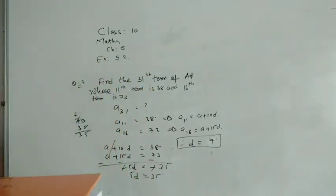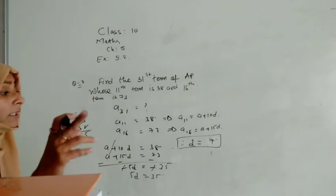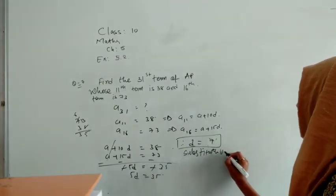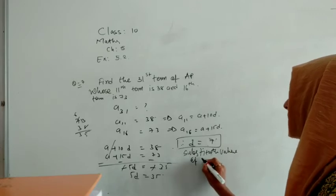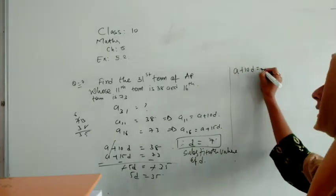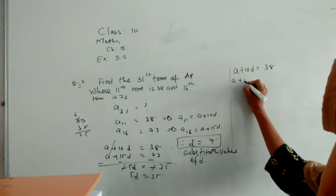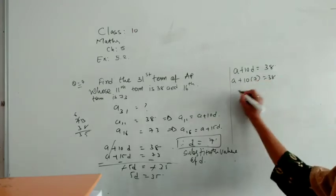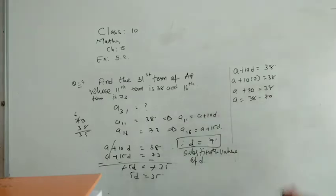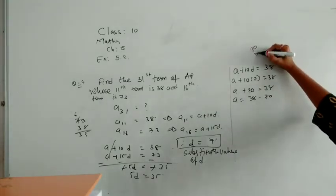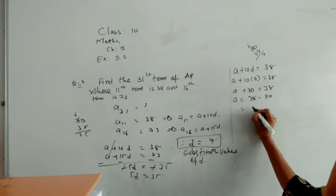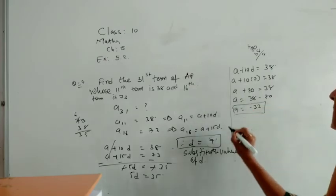Difference we have got. But we do not have a. The most important thing we are not having a. So here, substitute value of d in any equation. So if I am substituting in the first one, that is a plus 10d, and that is given as 38. So a plus 10 times 7 is equal to 38. Then we are getting it as 70. If 70 shifts, it will become minus 70. 70 minus 38, then we are getting it as minus 32. Minus 32 we are getting as the answer of a.